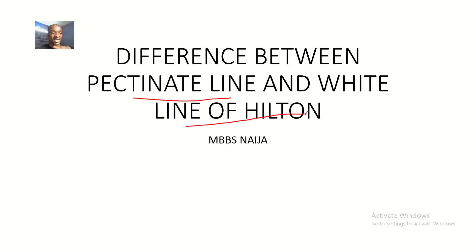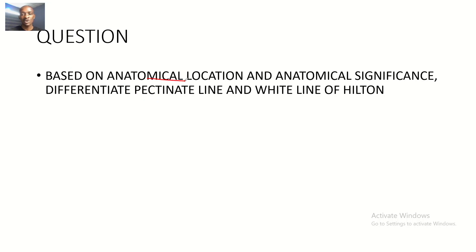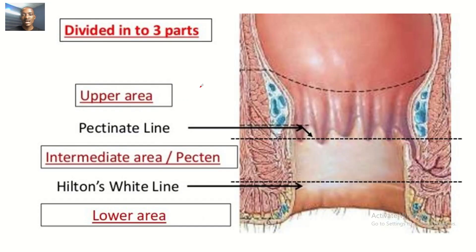Both are in the anal canal, but what are their differences? It's a very good question. The question is based on anatomical location and anatomical significance — differentiating the pectinate line and the white line of Hilton.